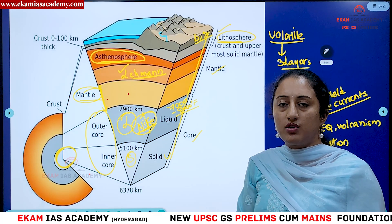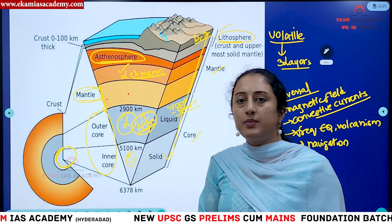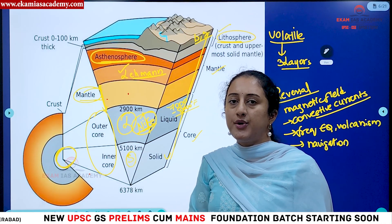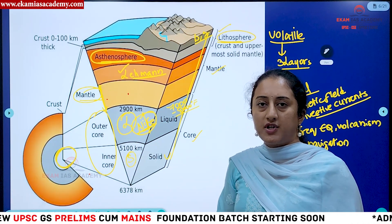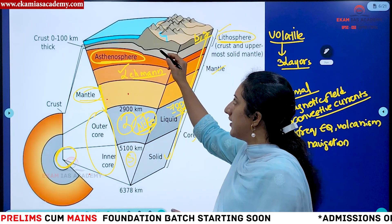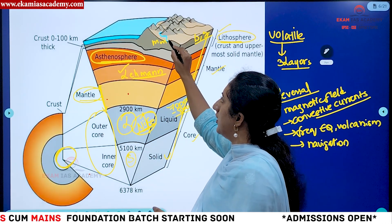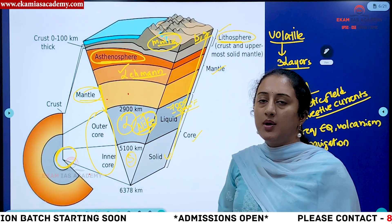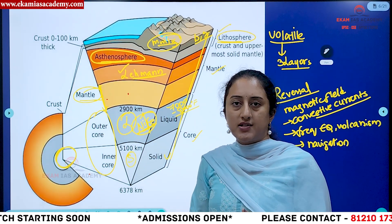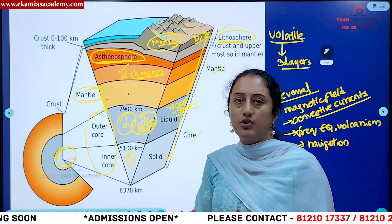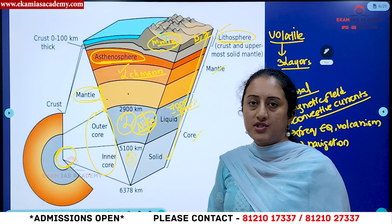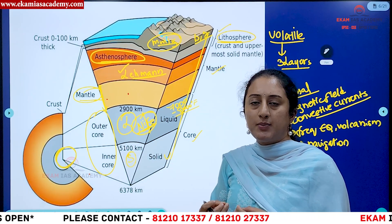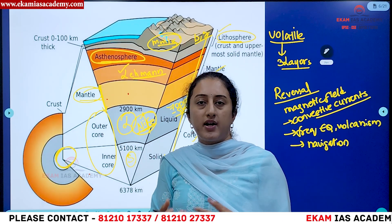There are two types of sources through which we draw inferences about the interior of the earth: direct sources and indirect sources. Direct sources are very difficult to obtain regarding the interior, so we primarily rely on data from mining and from volcanic eruptions as direct sources. Indirect sources include earthquakes, the magnetic field, gravitational pull, and other phenomena, which give us information about the materials and conditions inside the earth in an indirect way.